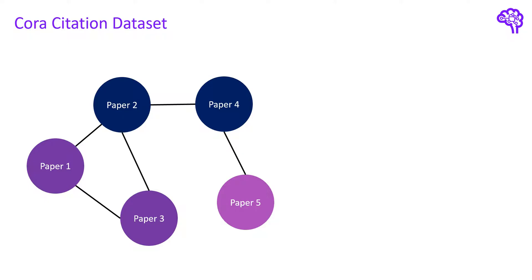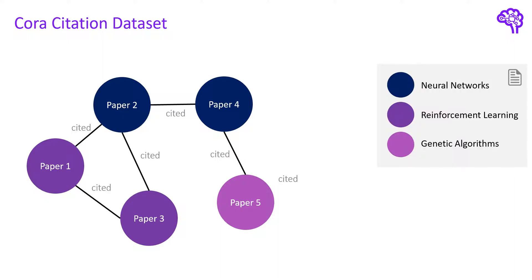In this example we have five publications — in the real dataset it's around 3000 — which are linked unidirectionally. We don't know which of the two nodes cited the other, but we know there is a relationship. Colors represent the labels or classes. For example, papers 2 and 4 are about neural networks, papers 1 and 3 are about reinforcement learning, and paper 5 is about genetic algorithms in combination with a neural network from paper 4.